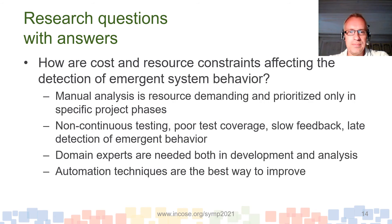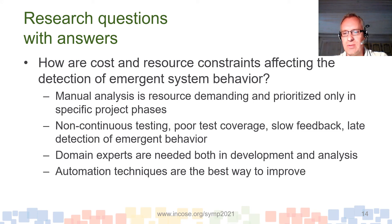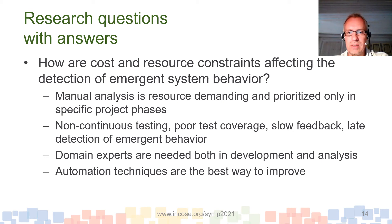The second question — how are cost and resource constraints affecting the detection of emergent system behavior — reveals that manual analysis is resource demanding and is only prioritized in specific project phases, giving good coverage in some phases and almost none in others. We also have no continuous testing, which gives poor test coverage and slow feedback because people are not in phase working at the same time, leading to late detection of emergent behaviors.